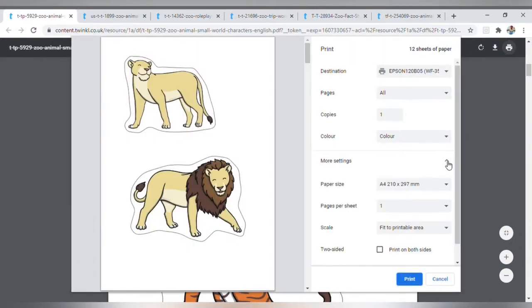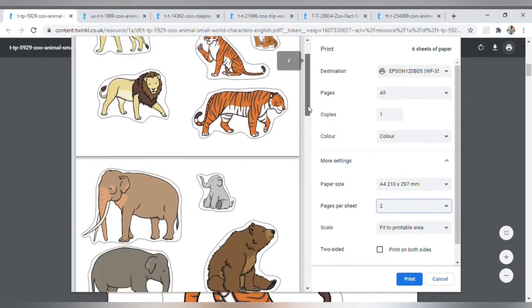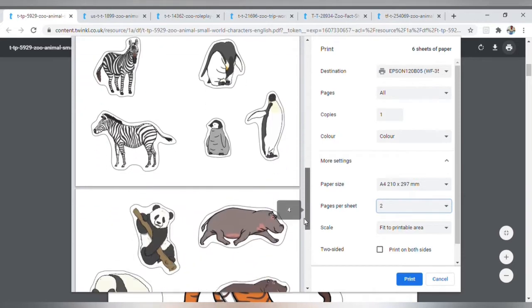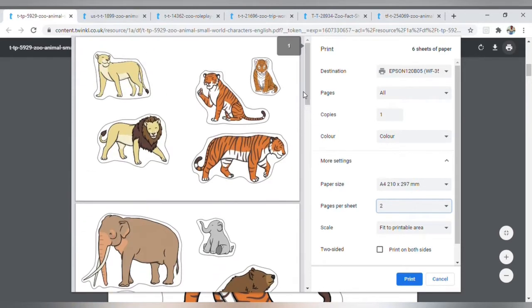If you need to change the size, the easiest way to do this is to increase the number of pages printed per sheet, and if you don't need all of the animals, you can customize the page range. Then once you've printed them, it's a good idea to laminate them so they last longer.